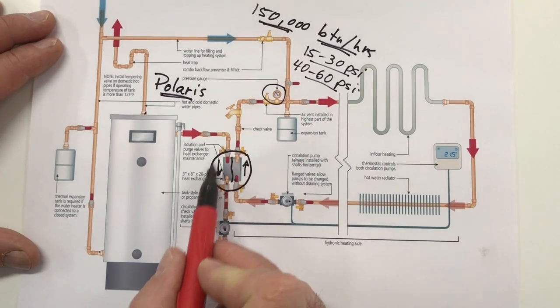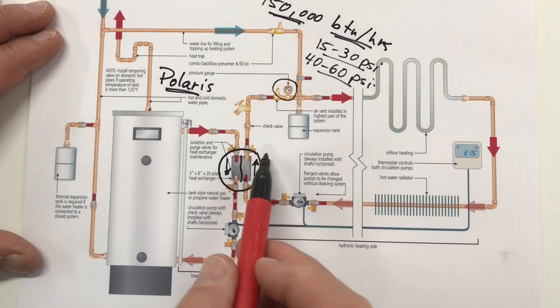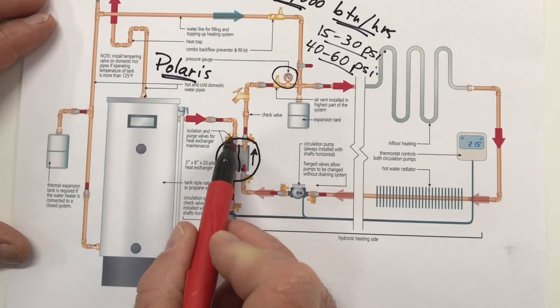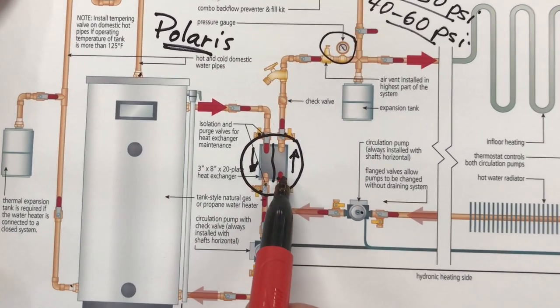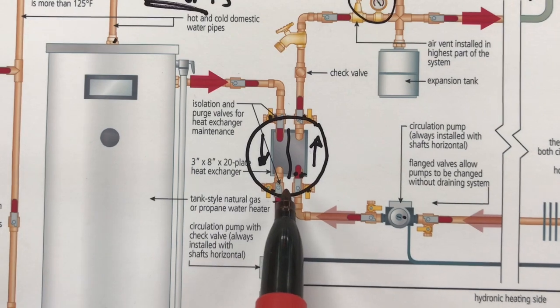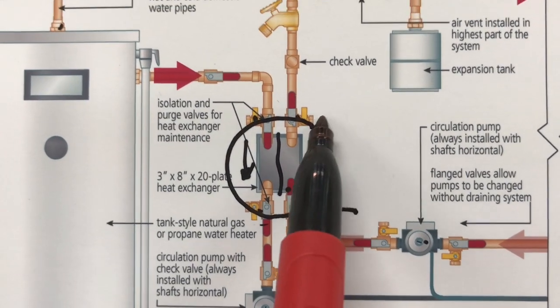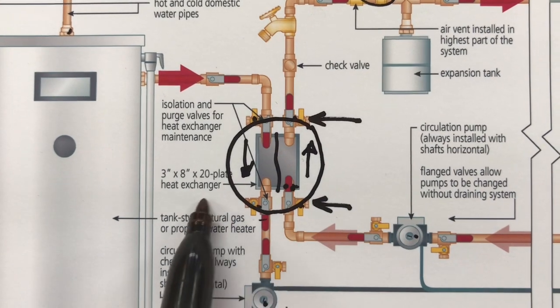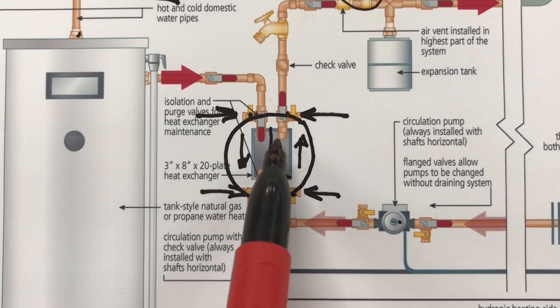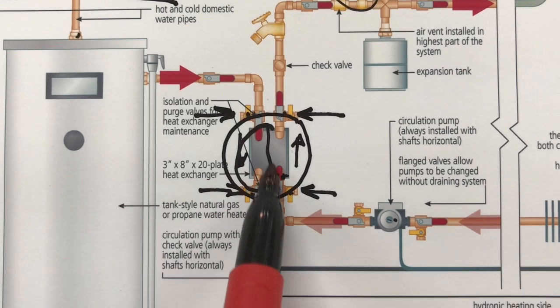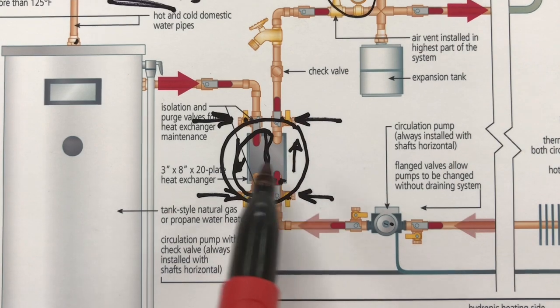Now if you do have a separate heat exchanger like this you are going to have to do the vinegar treatment and that's why I've installed these flush valves here. You can shut off the flow valve, open up these ports here, and you can flush some vinegar through there with a pump. Usually that only has to happen on the domestic side of the system not the hydronic side which doesn't build up minerals the same way.